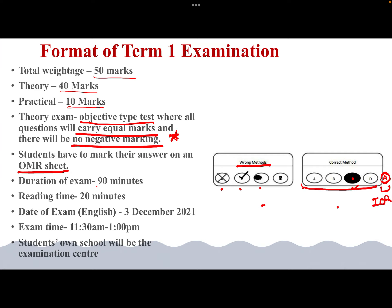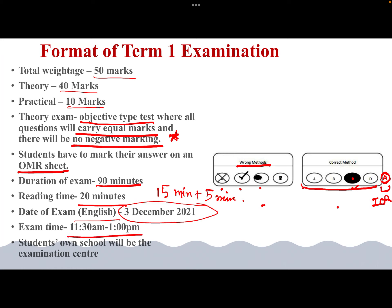The duration of the exam includes 20 minutes of reading time before the paper begins. Earlier there used to be 15 minutes of reading time, but this time you will get five extra minutes. The date of the English exam is 3rd December 2021, and the exam time will be 11:30 a.m. to 1 p.m.